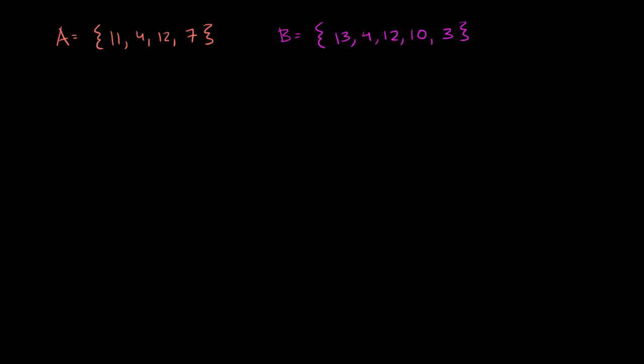So first of all, let's think about what A intersect B is going to be equal to. Well, it's the things that are in both sets. So I have 11 here. I don't have an 11 there. So that doesn't make the intersection. I have a 4 here. I also have a 4 here. So 4 is in A and B. So I'll put a 4 here. The number 12, it's in A and B. So I'll put a 12 here. Number 7 is only in A. And then number 13, 10, and 3 is only in B. So we're done. 4 and 12, the set of 4 and 12 is the intersection of sets A and B. And if we want to, we could even label this as a new set. We could say set C is the intersection of A and B. And it's this set right over here.